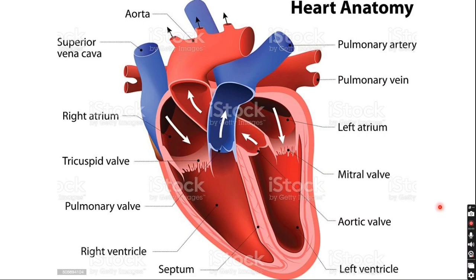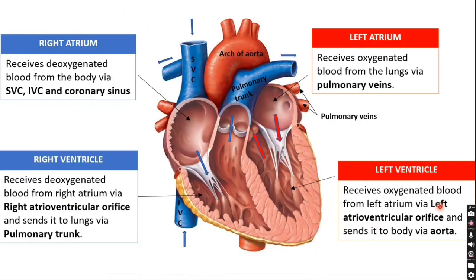For the anatomy of the heart, we should know the basic circulation of the heart and blood circulation. How many chambers are in the heart? There are 4 chambers: right atrium, left atrium, right ventricle, and left ventricle.